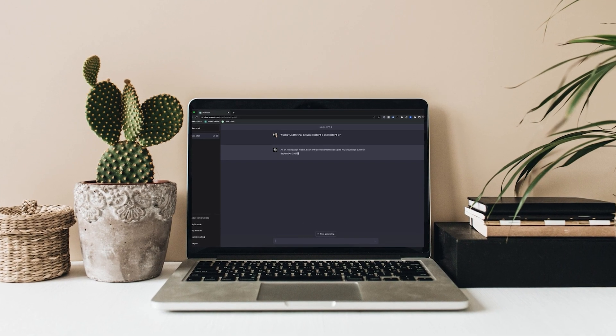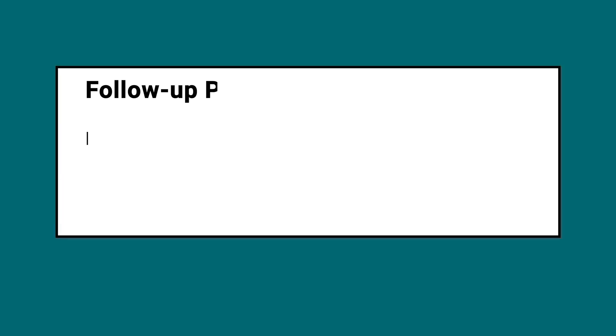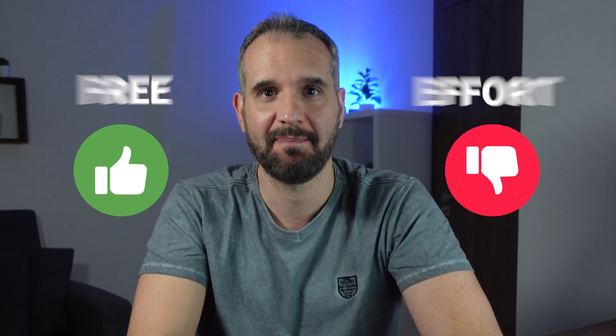Using prompts for paraphrasing is the first method. You can ask ChatGPT or any other chatbot to assume the role of a persona — in our case, the role of a copywriter. Continuing the conversation and providing enough context for your audience, the scope of your text, and the tone of voice you want to use will ensure the result is rock solid. Although this method is free, it requires some effort for adjustments, making it a bit time-consuming.